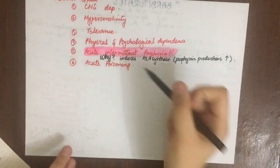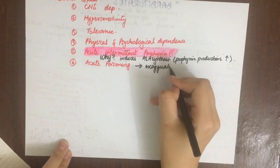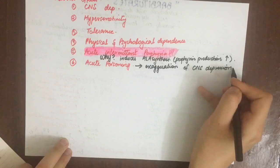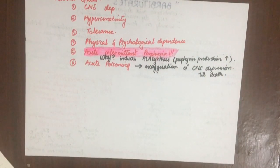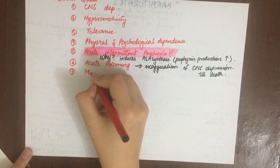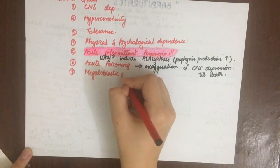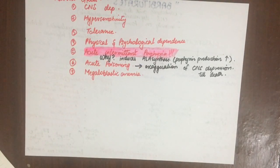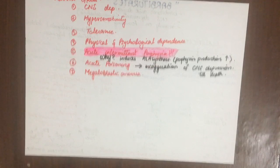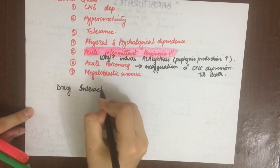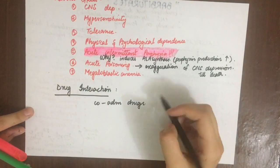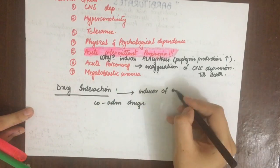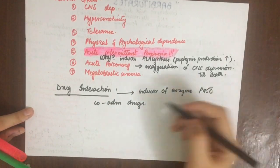In acute barbiturate poisoning, the signs and symptoms are the same as exaggerated CNS depression — drowsiness, restlessness, hallucinations, hypotension, respiratory depression, convulsions, coma, and death. For treatment, all emergency measures along with gastric lavage can be used. Since flumazenil cannot be used as an antagonist, we can make the urine alkaline so that barbiturates are excreted in the urine.